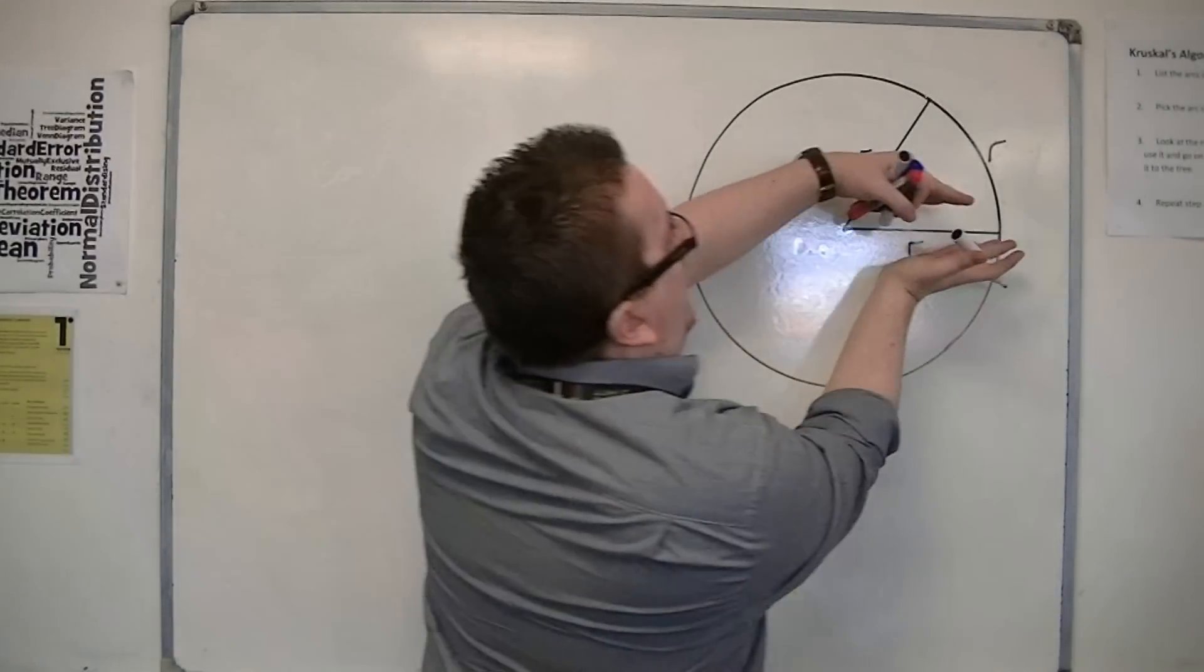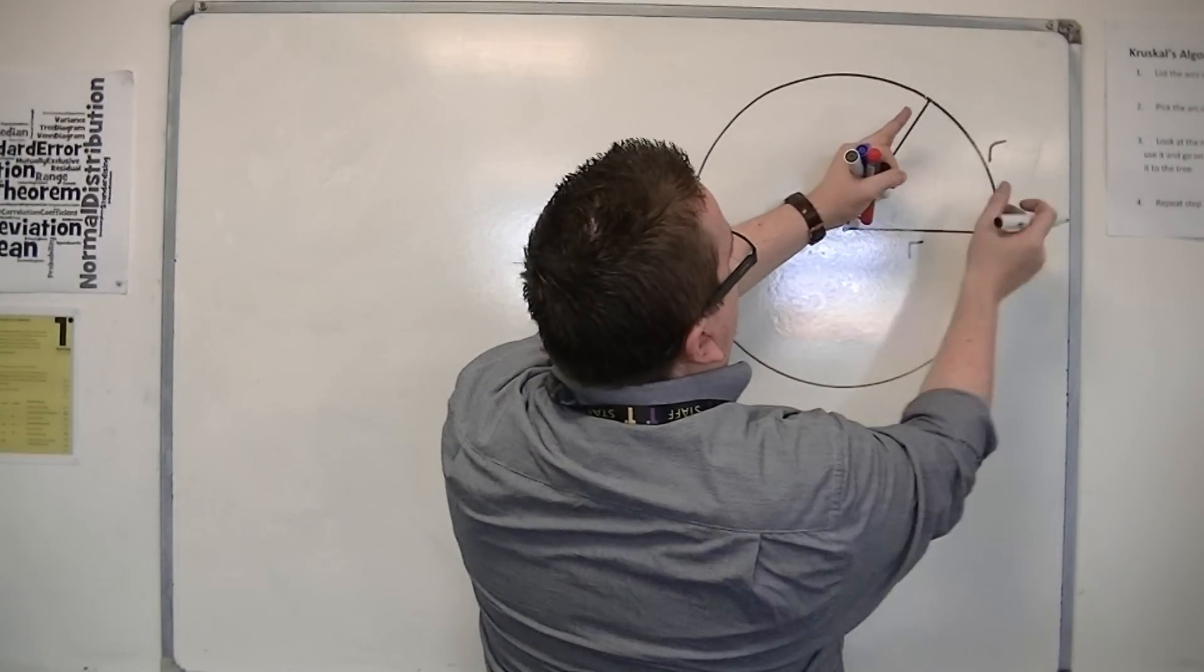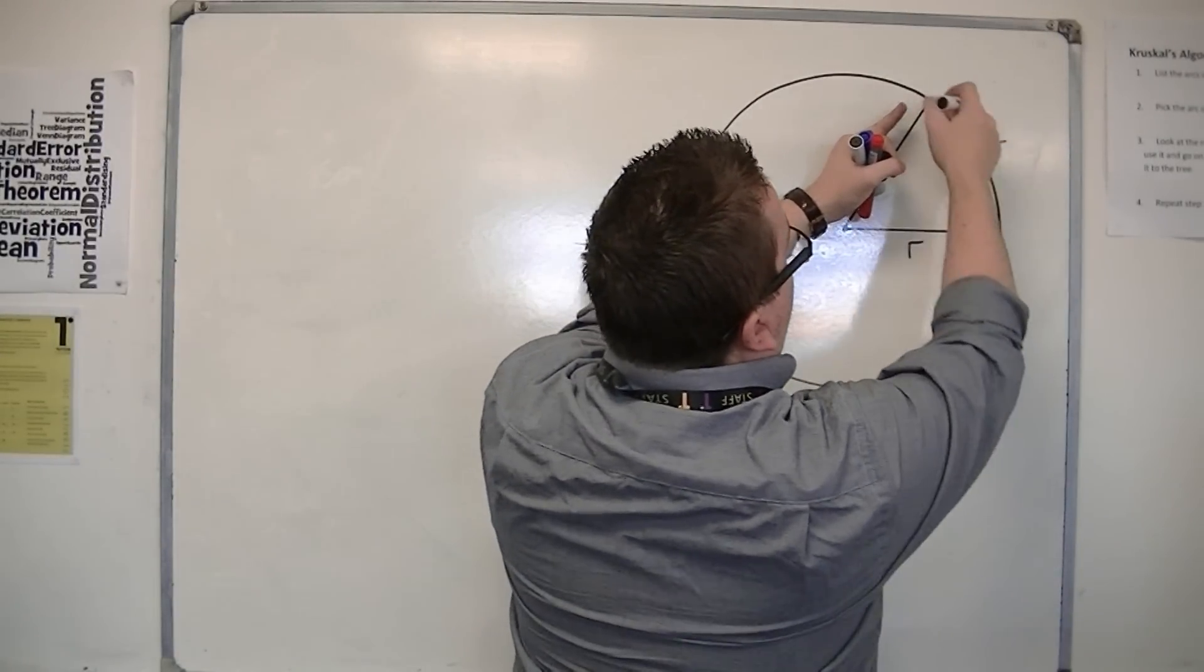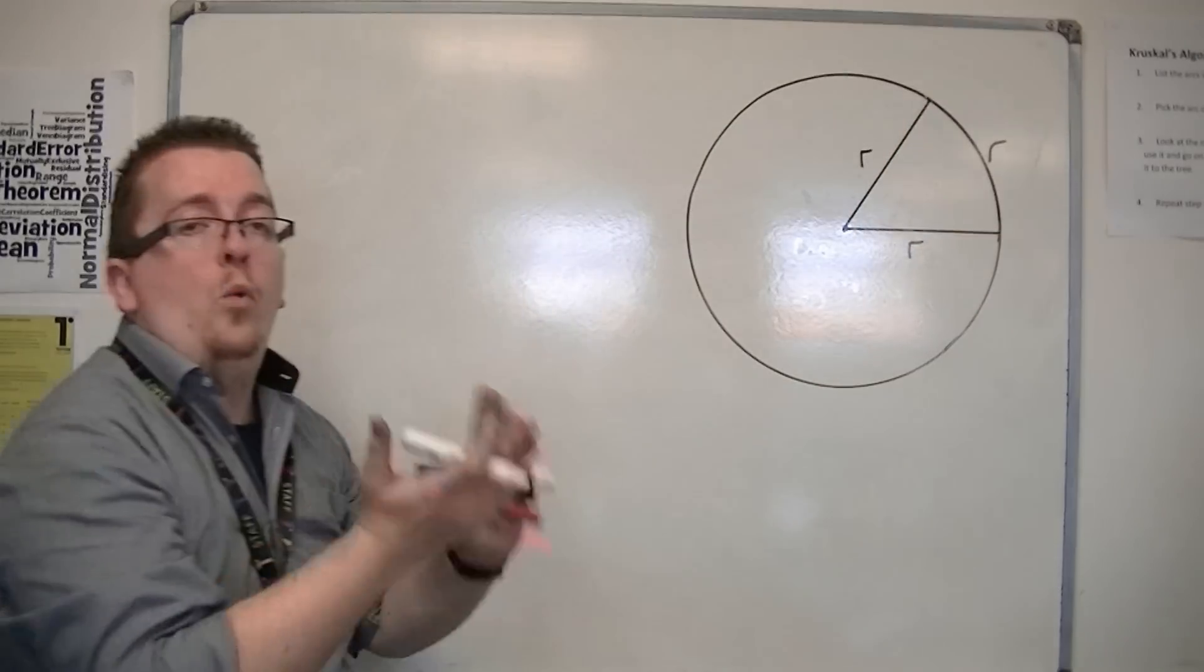So there is going to be a point where the length around the outside of the circle also is r. So at that angle, where it reaches that length being the same as the radius, let's call that 1 radian.